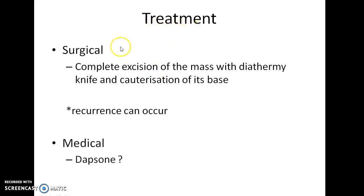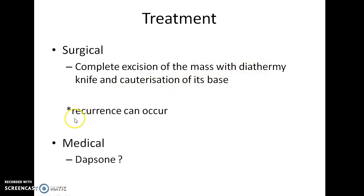How do you treat a case of Rhinosporidiosis? Surgery is the treatment of choice. Complete excision of the mass with a diathermy knife and cauterization of its base is the treatment of choice. Recurrence can occur. Medical treatment with Dapsone has been tried but its efficacy is not yet proven.